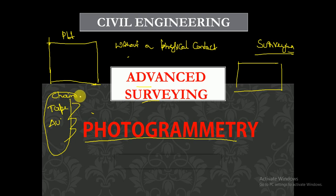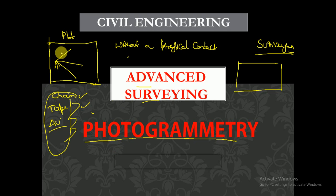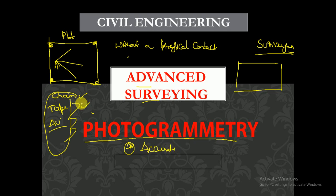Normally during measurements with chain, tape, or levels, you come to the field, have physical contact, stand there, and do all the traces and measurements. But in photogrammetry, you are not supposed to come in contact with the field. Without having contact with the field, you will measure the distances. In photogrammetry we get accurate measurements, whereas with chain, tape, or levels there are errors — due to verniers, not holding the rod straight, etc.